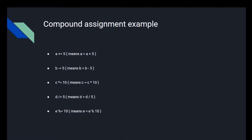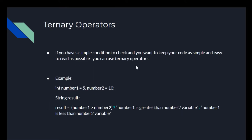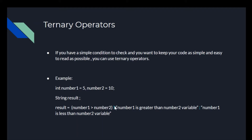Now we have our next one, which is the ternary operator. What this does is: if you have a simple condition and want to keep your code as simple and easy to read as possible, you use the ternary operator. An example: int number1 equals 5 and number2 equals 10. We write result equals — inside parentheses number1 is greater than number2 — then a question mark, then in double quotation marks 'number1 is greater than number2', colon, then 'number2 is greater than number1'.